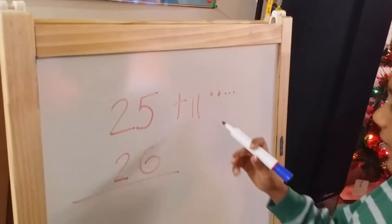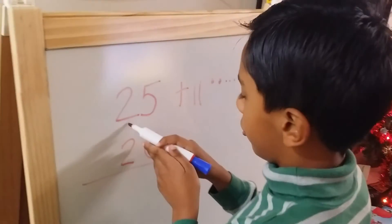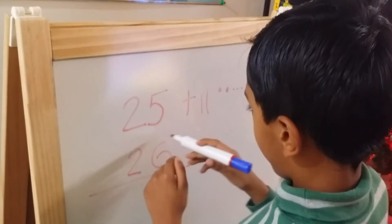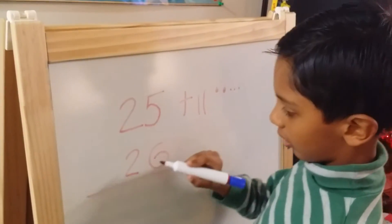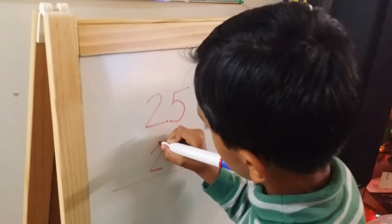I did this. Two tens and five more make 25. I get two tens.